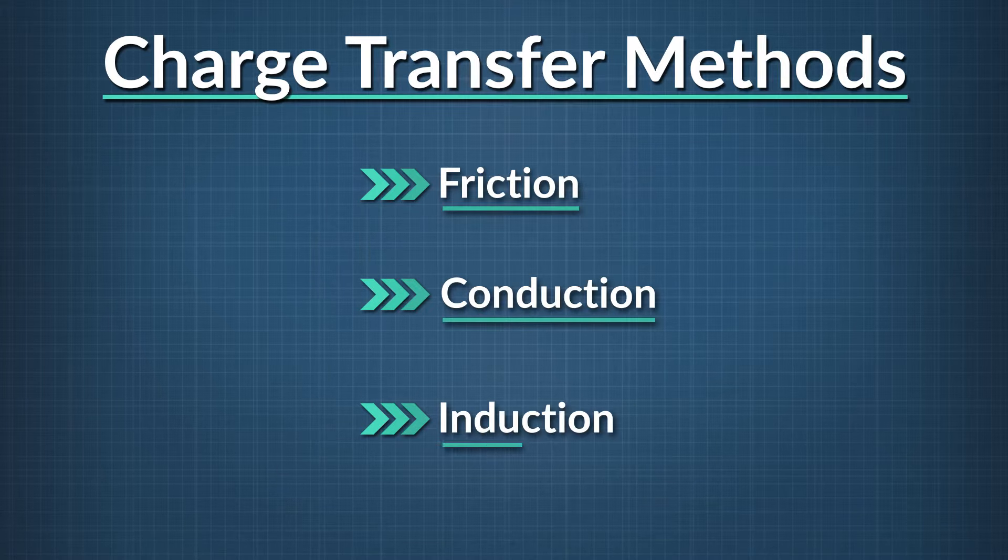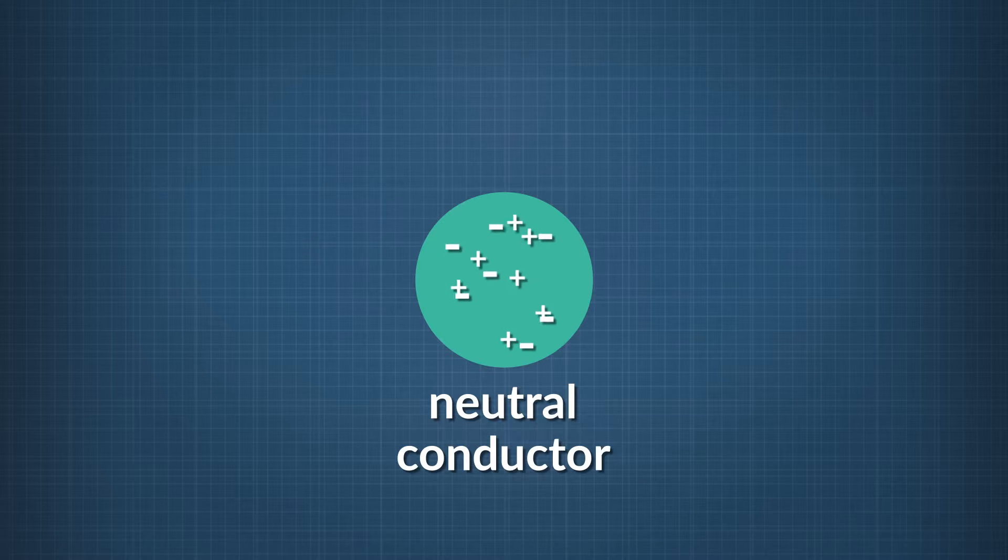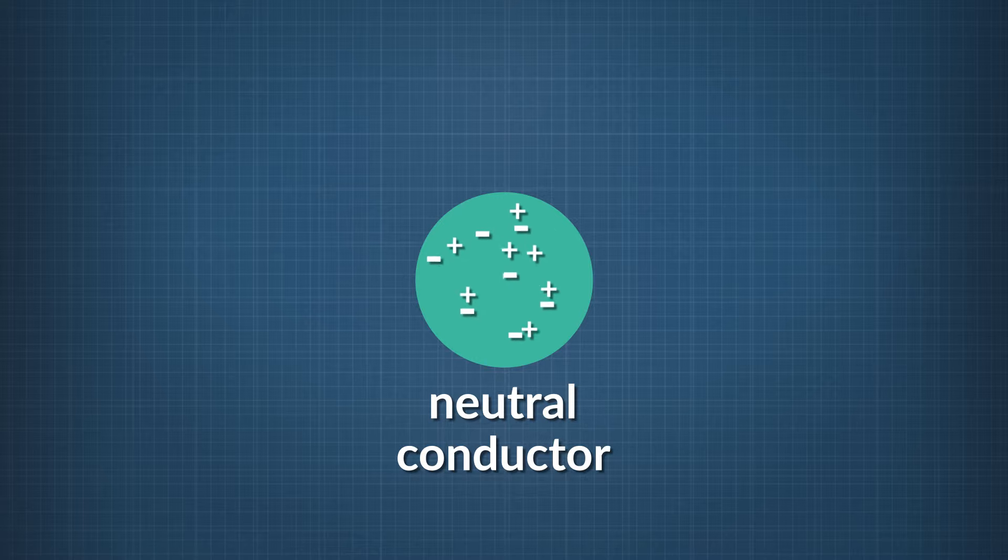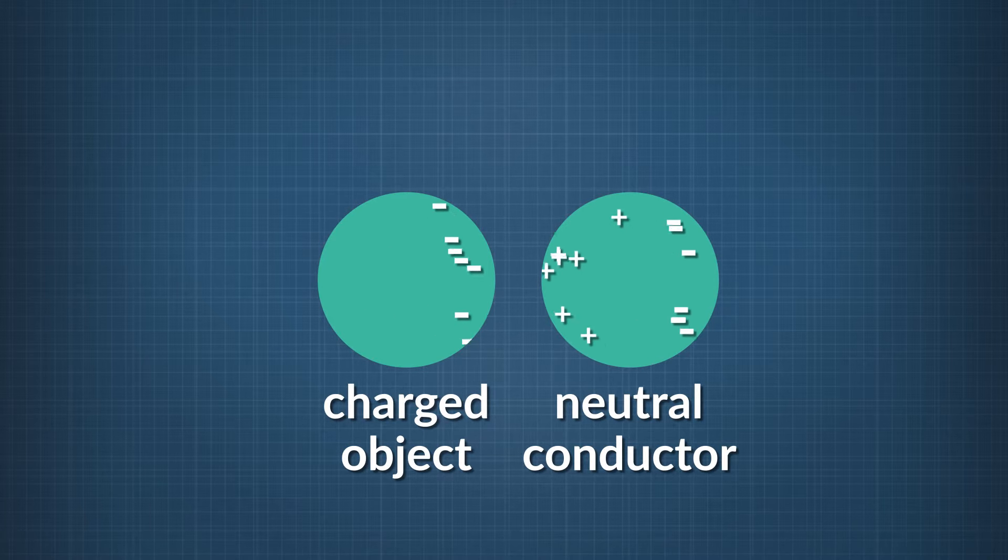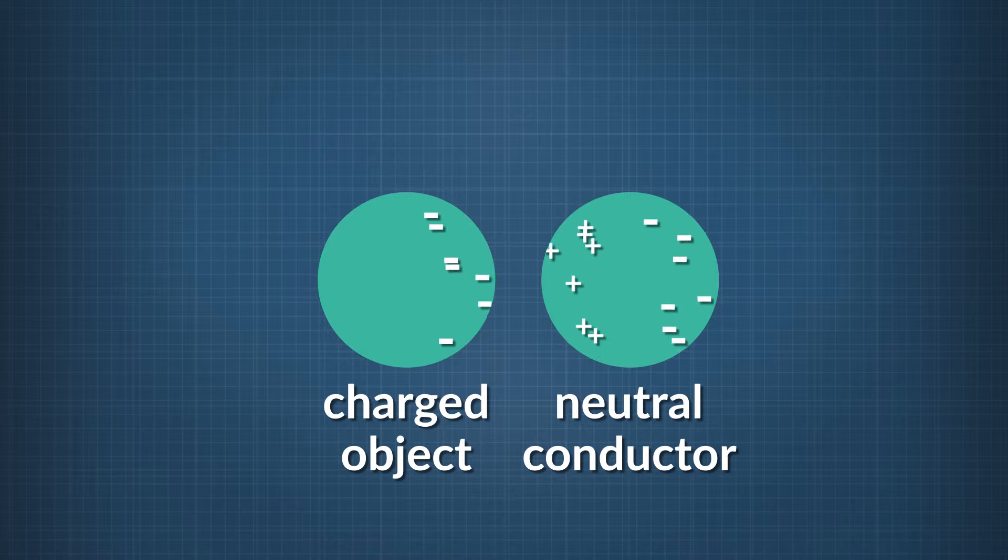Another way a conductor can become charged is by the process of induction. Induction happens when a charged object is brought near, but doesn't touch, a conductor. Because of attraction between opposite charges and repulsion between like charges, the electrons in a conductor will move around when a charged object comes near. The charged object will create an electric field that pushes or pulls the electrons within the conductor.